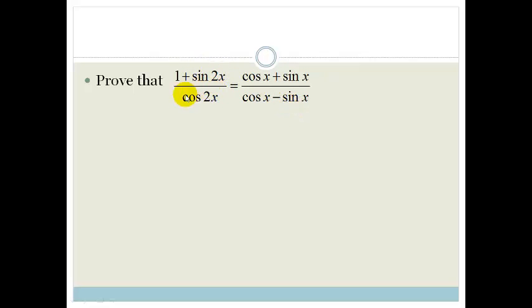So again let's just think about what these can become. sin 2x is equal to 2 sin x cos x, cos 2x is equal to cos squared x minus sin squared x, and then it can become 2 cos squared x minus 1, or it becomes 1 minus 2 sin squared x.